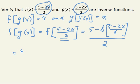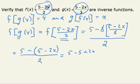So I'm left with 5 minus, and I have to be very careful of parentheses here, 5 minus 2x, all of that divided by 2. Distributing carefully, I get 5 minus 5 plus 2x divided by 2.